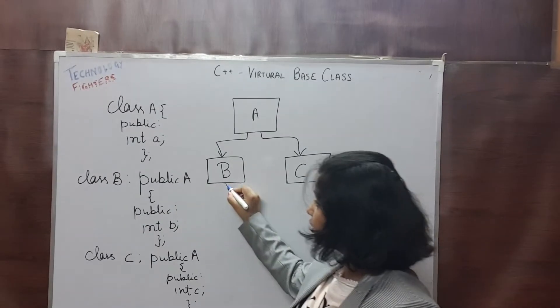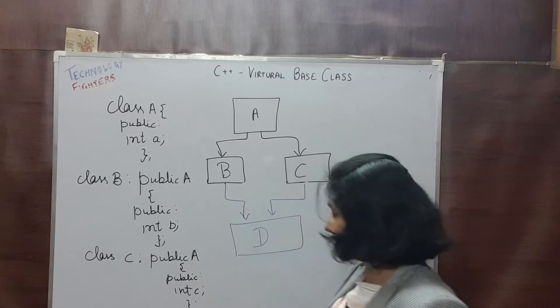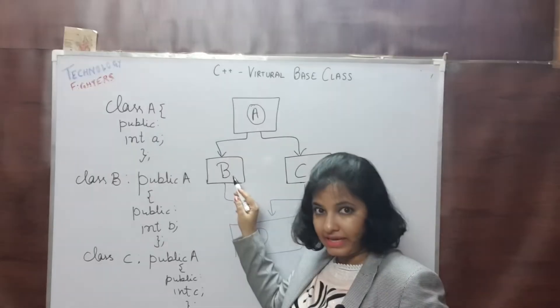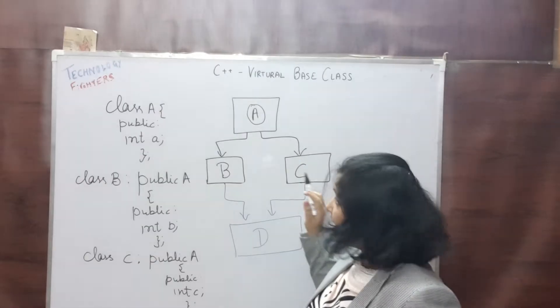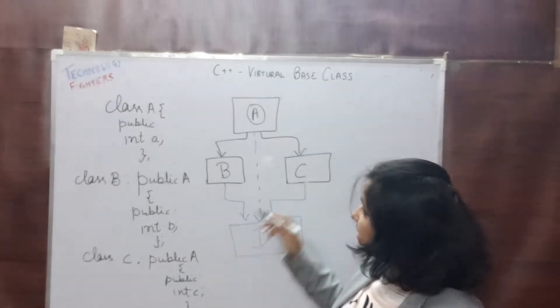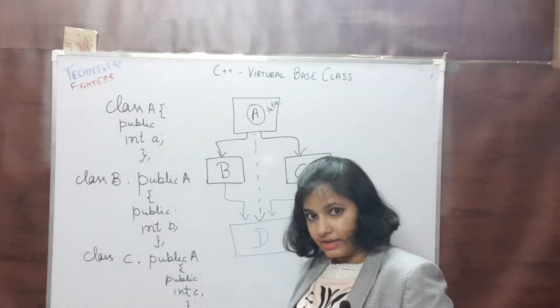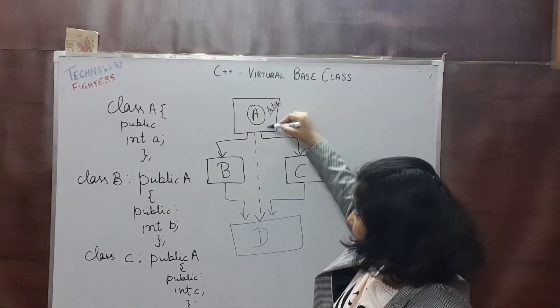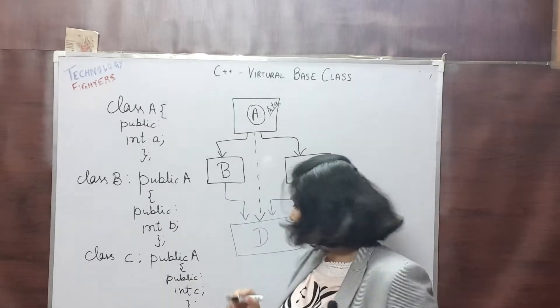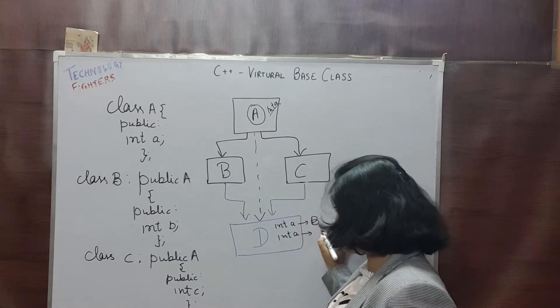But suppose if I include one more derived class like this, as you can see, A is the base class for B and for C, and the base class for D also. One variable that is A is coming through B class, and one variable A is coming through C class. That means class D contains two copies of variable A, one from B and one from C.